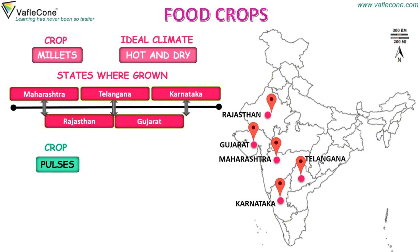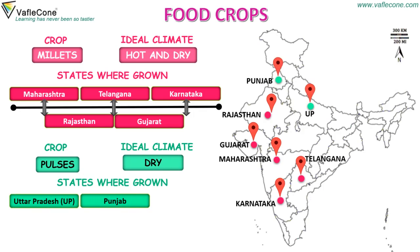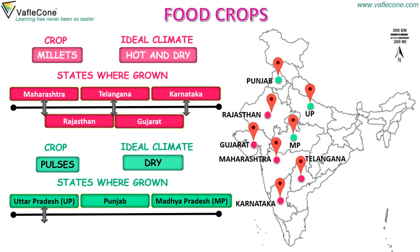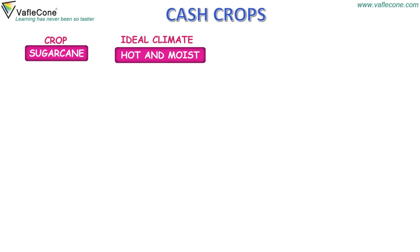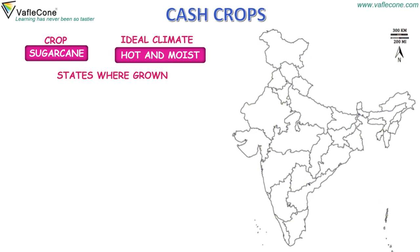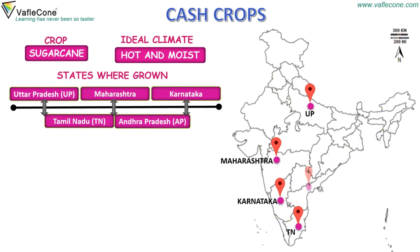Pulses. The ideal climate for pulses is dry. States where pulses are grown are Uttar Pradesh, Punjab, Madhya Pradesh, Andhra Pradesh and Rajasthan. Sugar cane. The ideal climate for sugar cane is hot and moist. States where sugar cane is grown are Uttar Pradesh, Maharashtra, Karnataka, Tamil Nadu and Andhra Pradesh.